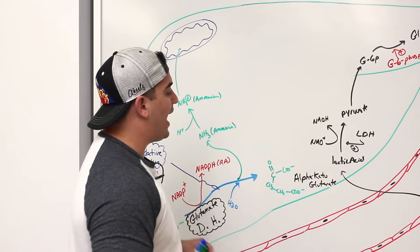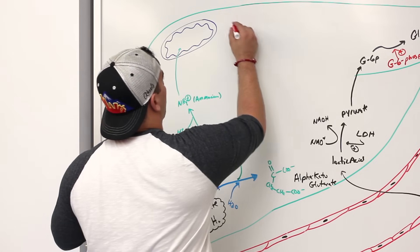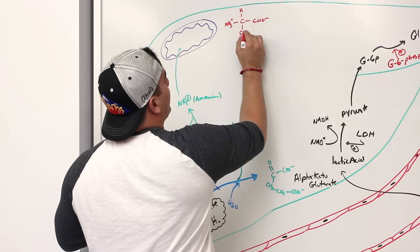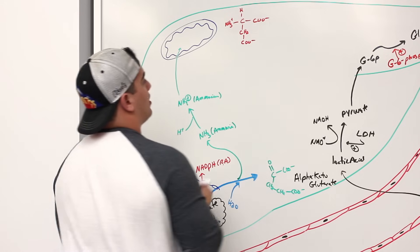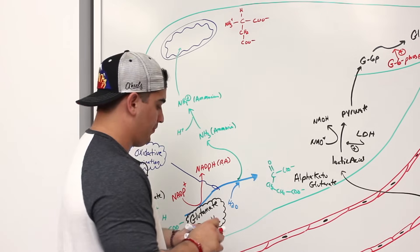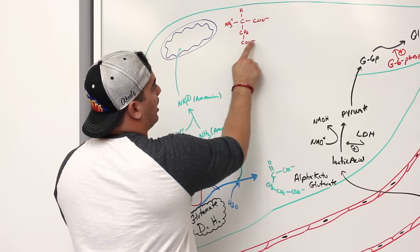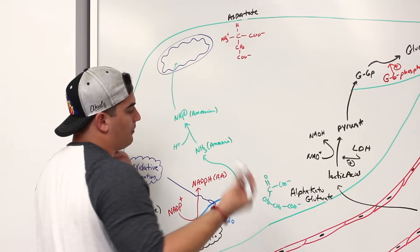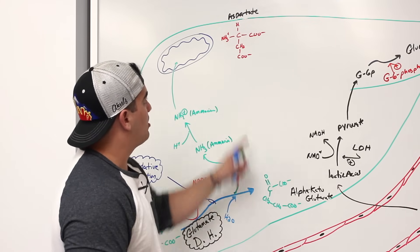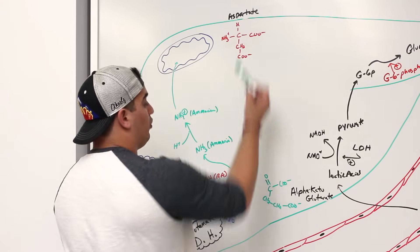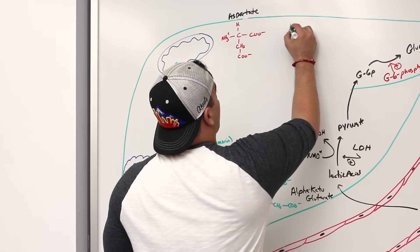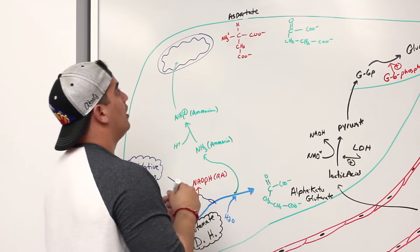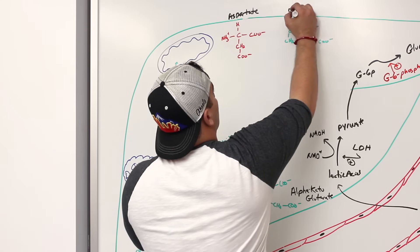Now there are other amino acids that can undergo this transamination process. Let's take aspartate. Aspartate is very similar to glutamate — it has an amine group, a carboxyl group, but instead of two CH2 groups it goes straight CH2 to carboxylate. This is aspartate, or aspartic acid in its acid form. I'm going to take aspartate and react it with the alpha-ketoglutarate we generated from oxidative deamination — which has a double bond oxygen with a carboxyl group, CH2, CH2, and another carboxyl group.